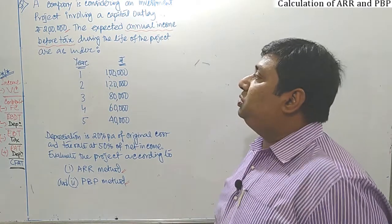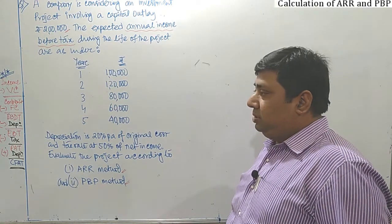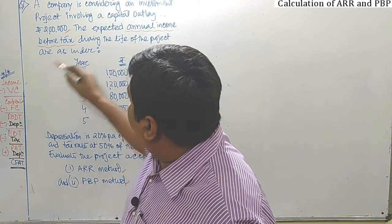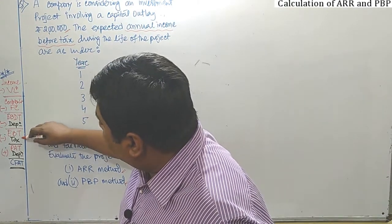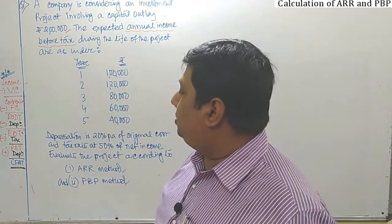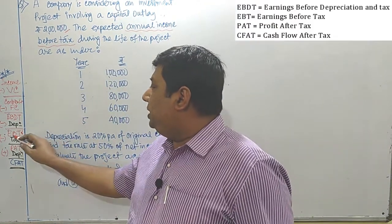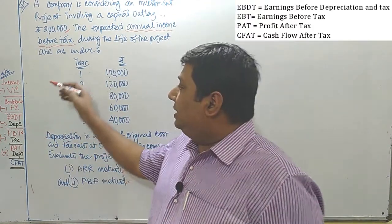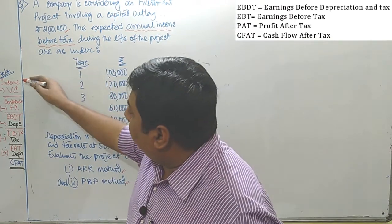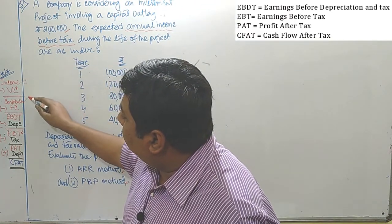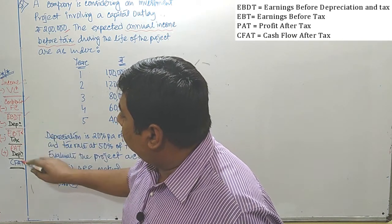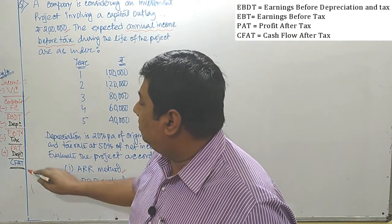Annual income before tax is mentioned to us. If you follow our income statement, annual income before tax — here you pay tax. So before tax represents what particular level? It is earning before tax. As I said, there are several layers of income: contribution is one layer, EBDT is one layer, EBT is also one layer, PAT is also one layer, and CFAT also.